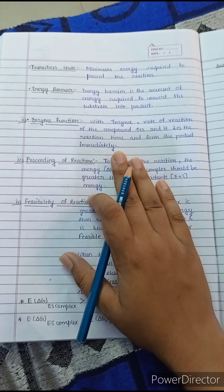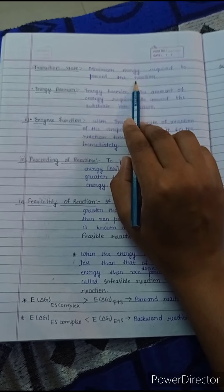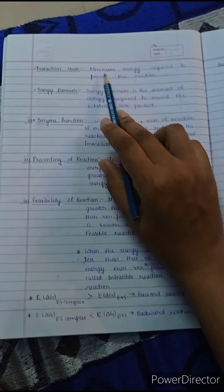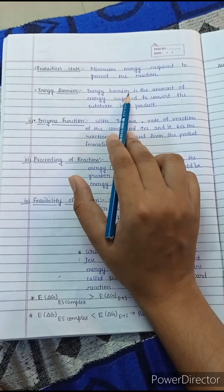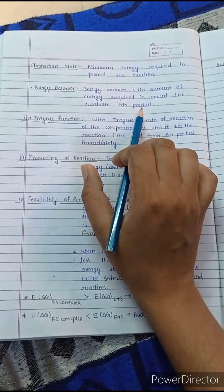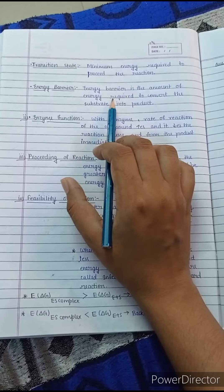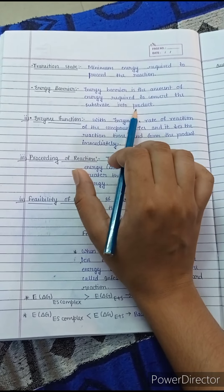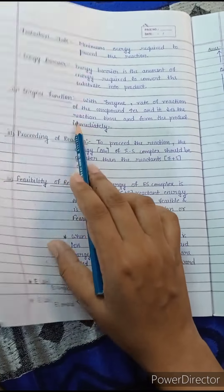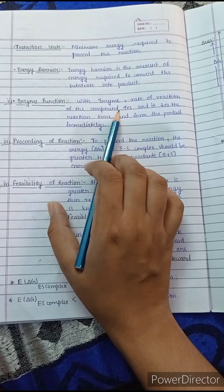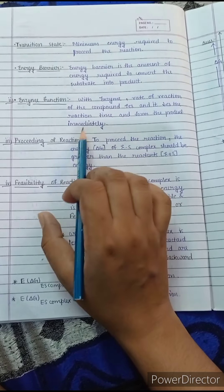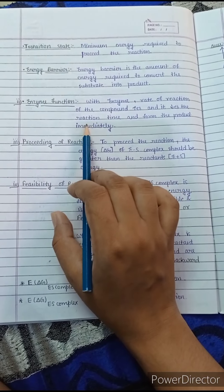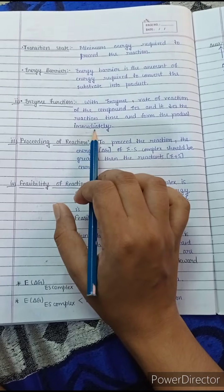The transition state is the minimum energy required to proceed the reaction. The energy barrier is the amount of energy required to convert the substrate into the product. The function of the enzyme is to increase the rate of reaction of the compound, decrease the reaction time, and form the product quickly.